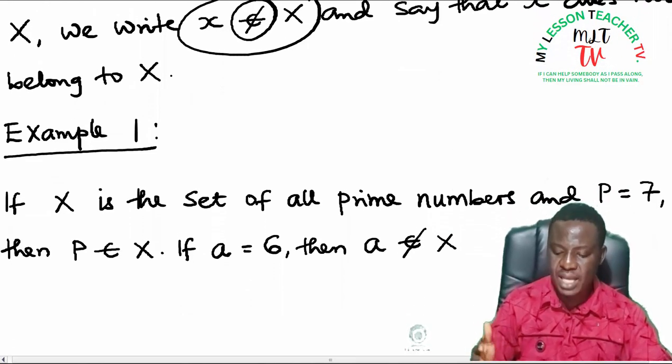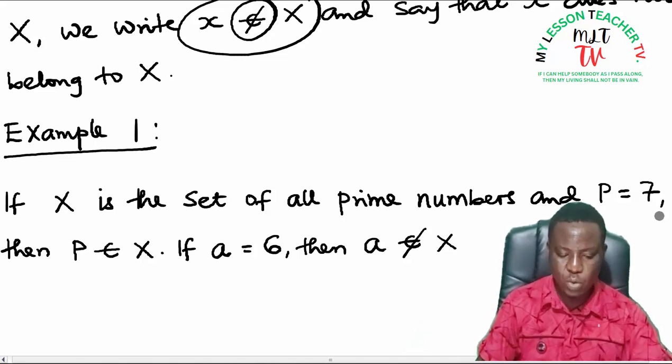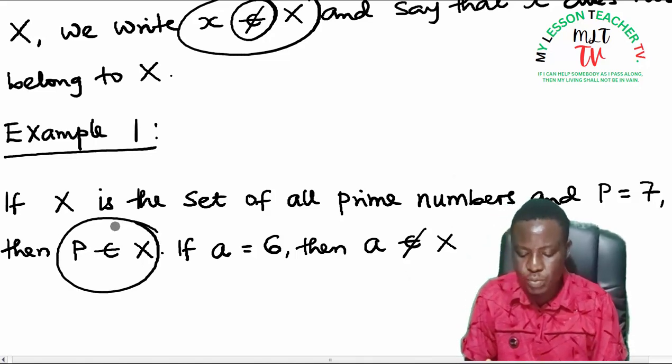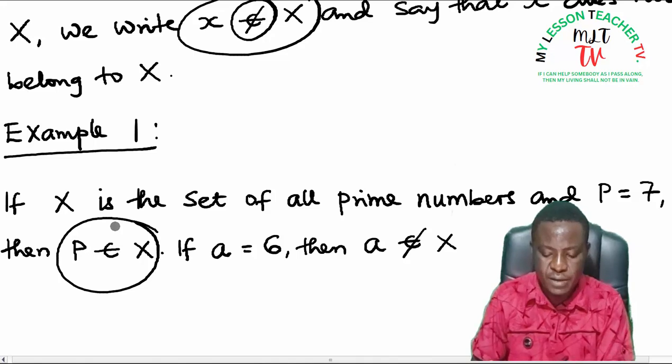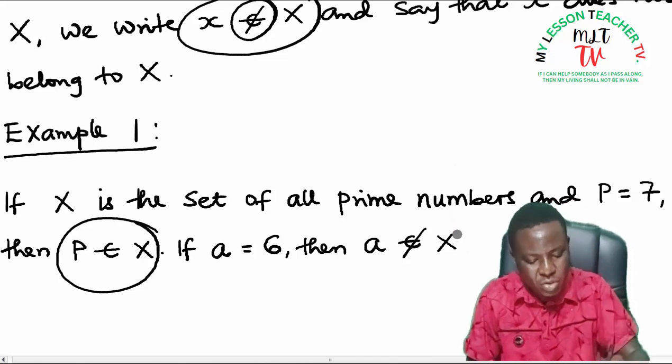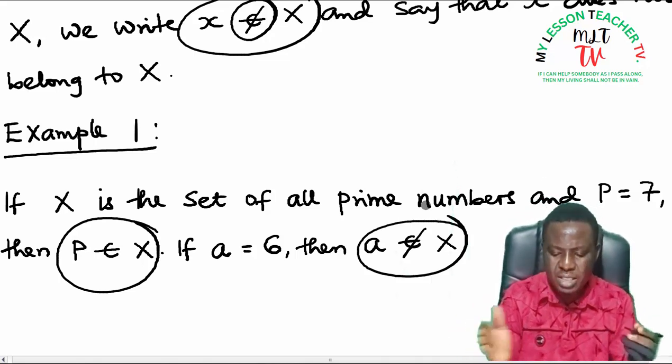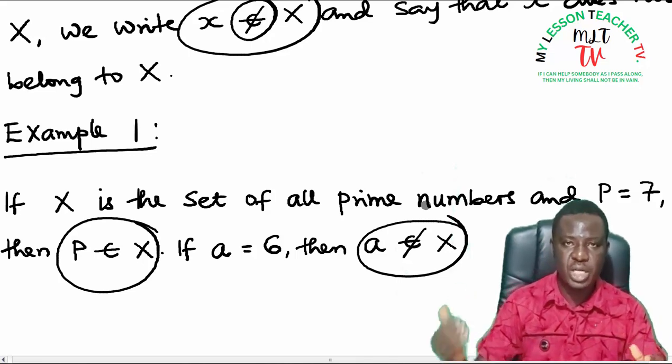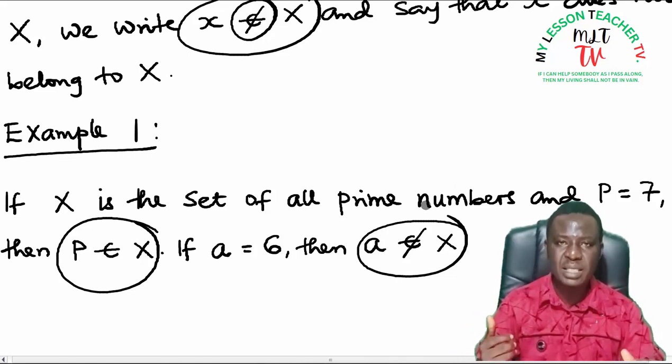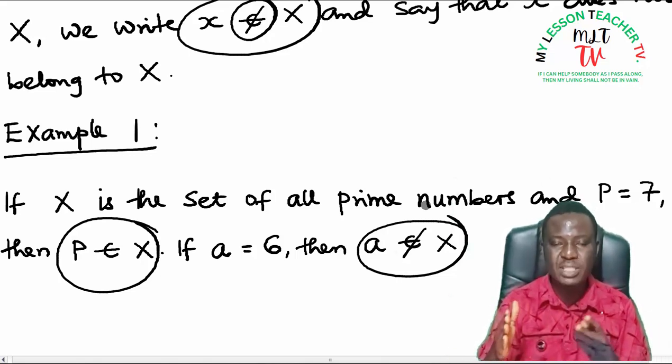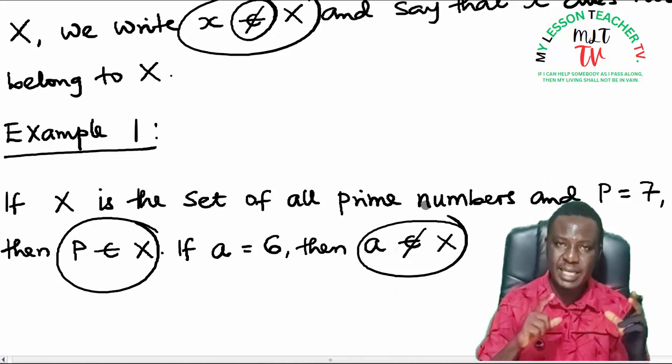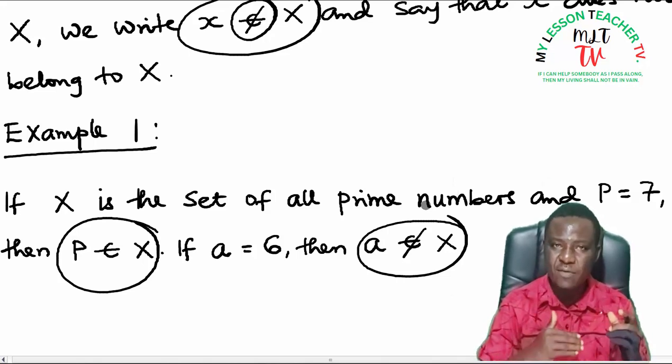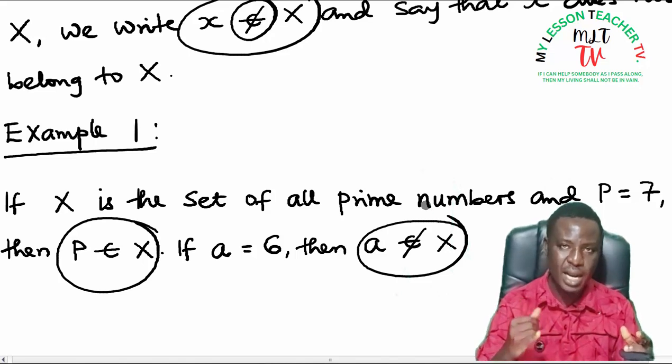Example 1: If X is a set of all prime numbers and P equals 7, then P is said to be an element or a member of X. But if A equals 6, then A is not an element of set X. Why is 6 not a member or an element of the set X? Remember, in our JS series, we define prime numbers to be numbers that have only two factors, one and itself. If you look at 7, we said 7 is a member of that class because 7 clearly defines prime number. 7 is a number that has only two factors, one and seven. So there is no other smaller number that can divide 7 without a remainder, excluding 1 and 7 itself.